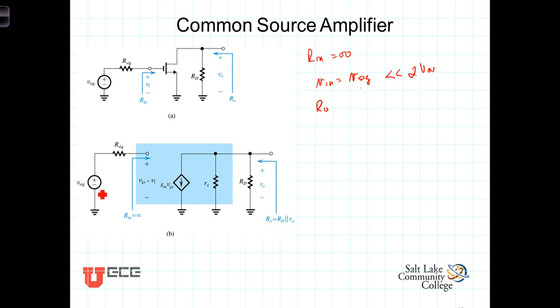By deactivating the signal source here, this current source then has zero current and is effectively an open circuit. The output resistance then is seen to be simply the parallel combination of our drain resistor, R sub D, with little r0, the early effect resistance.